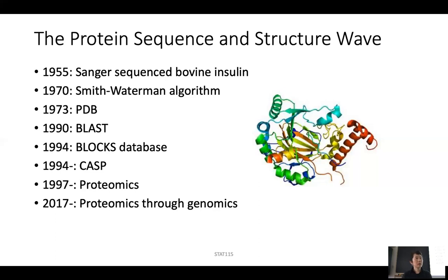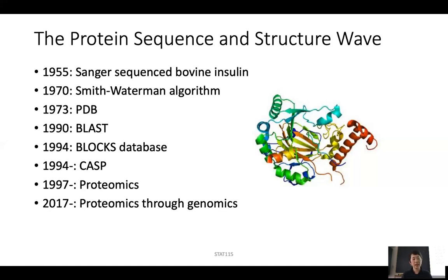In 1997, people started looking at proteomics — looking at many proteins expressed in one tissue or cell condition at a time. For many years, people developed new technologies, but proteomics didn't really take off until around 2017, when people started adopting genomic technologies into proteomics by using DNA barcodes to directly label each protein or antibody for detection. So the protein wave was the very first wave where bioinformatics started, and the most famous case is protein structure prediction.